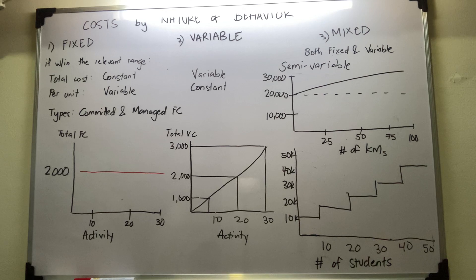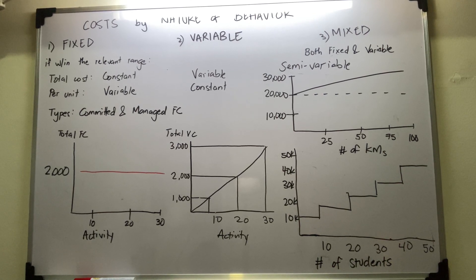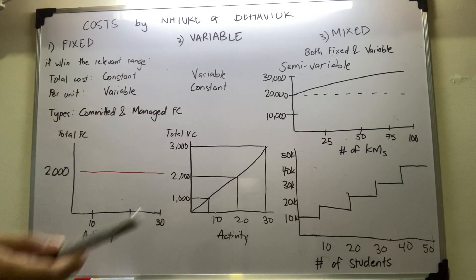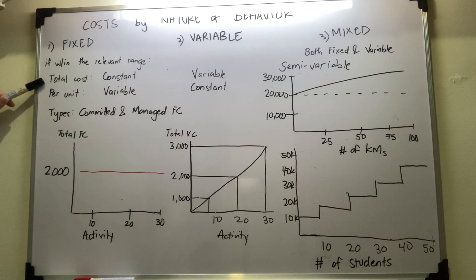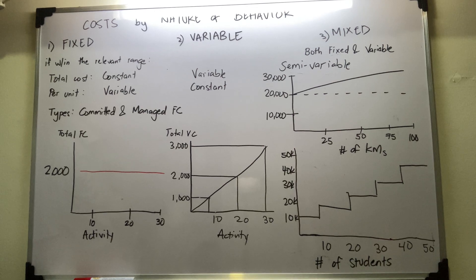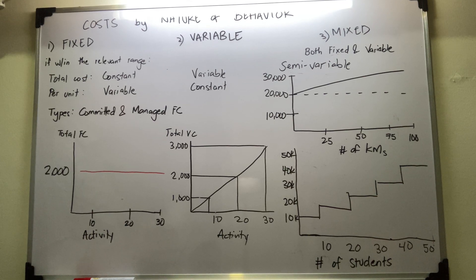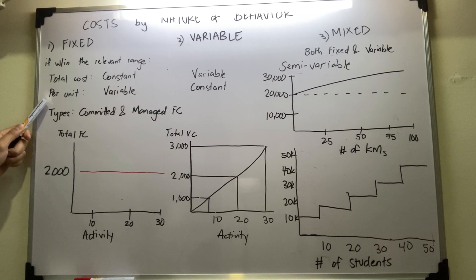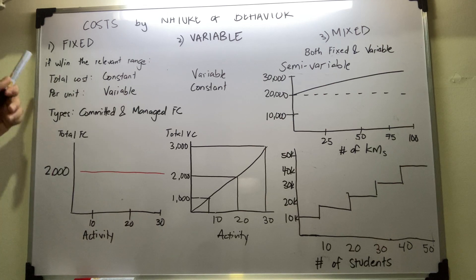The technique to properly remember the difference between fixed, variable, and mixed is having a diagram of total cost and per unit. For fixed cost, the total cost would be constant — let's say 20,000. For example, renting a machine is 20,000 pesos. Whatever happens, you're going to pay 20,000 pesos monthly. The per unit is where the variable component of a fixed cost happens.